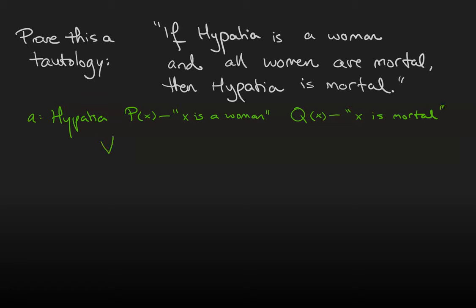Therefore, we are trying to prove the statement: if all P's are Q's. Alright, we learned in the last video that this statement says every woman is mortal, and Hypatia is a woman. Then Hypatia is mortal.